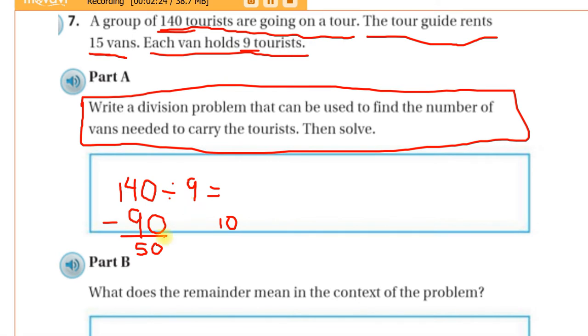And then now I can use what I know about my nines times tables to get close to 50. So, 9 times 5 would be 45. So, that would be 5 more nines. That would be 45. Subtract. And that gives me 5 left over.